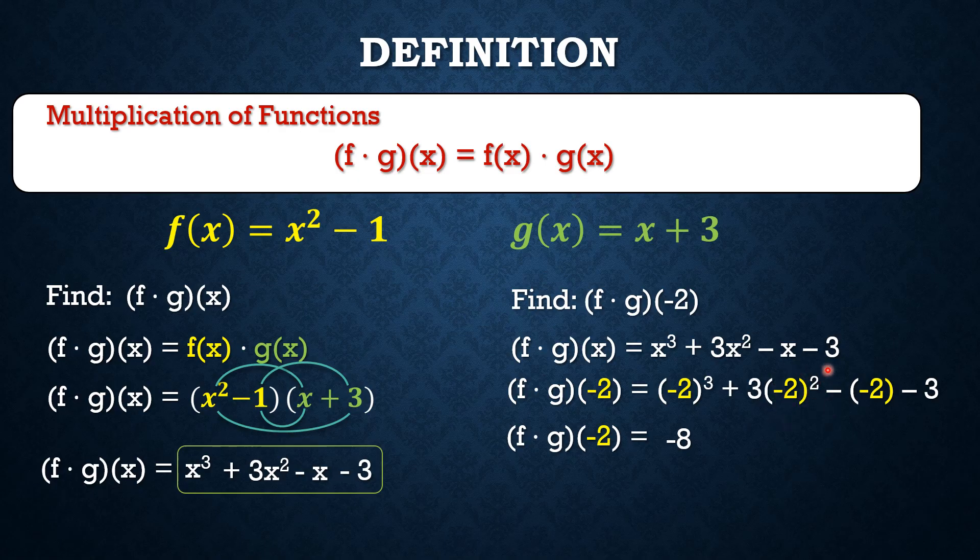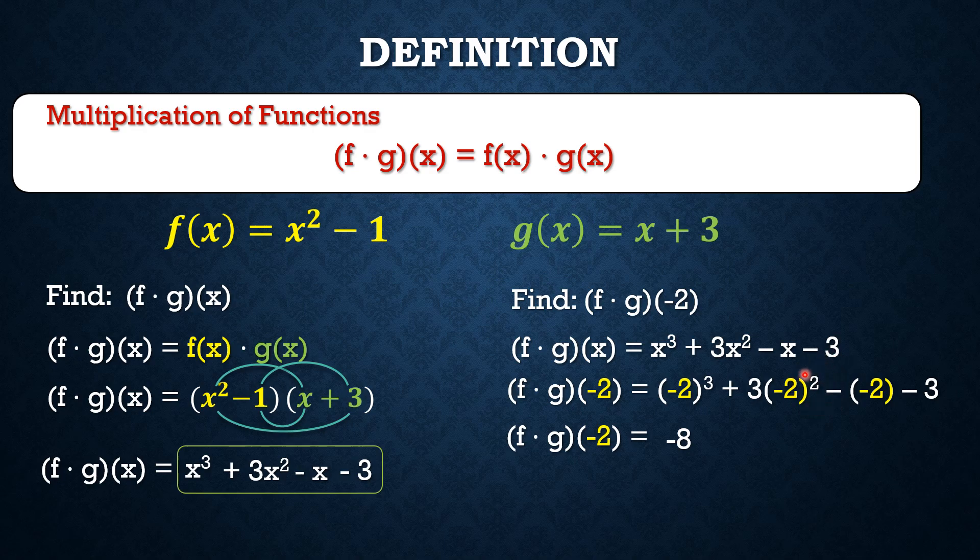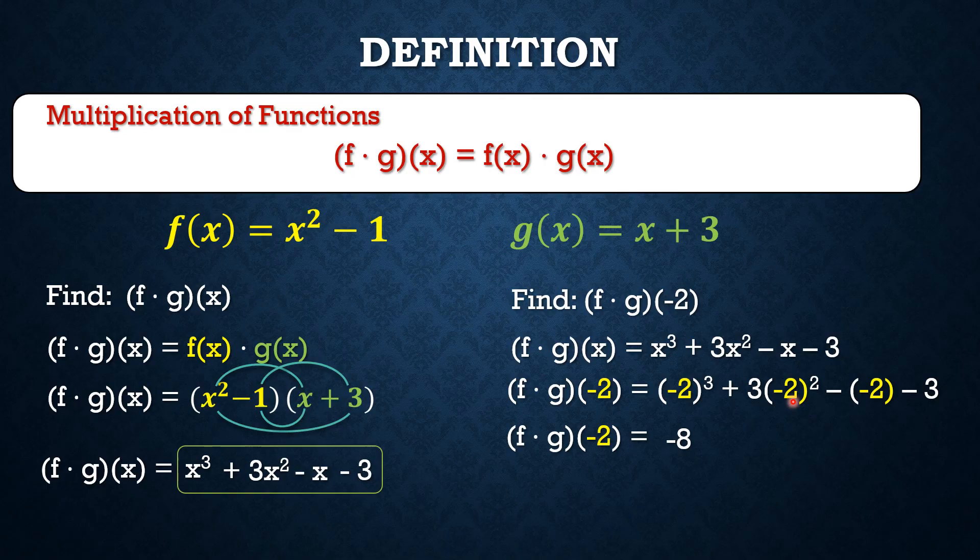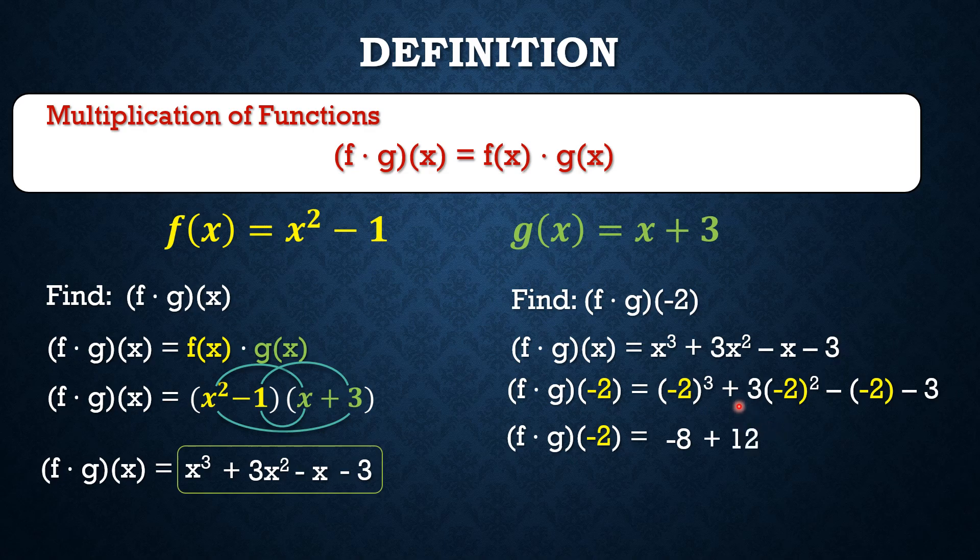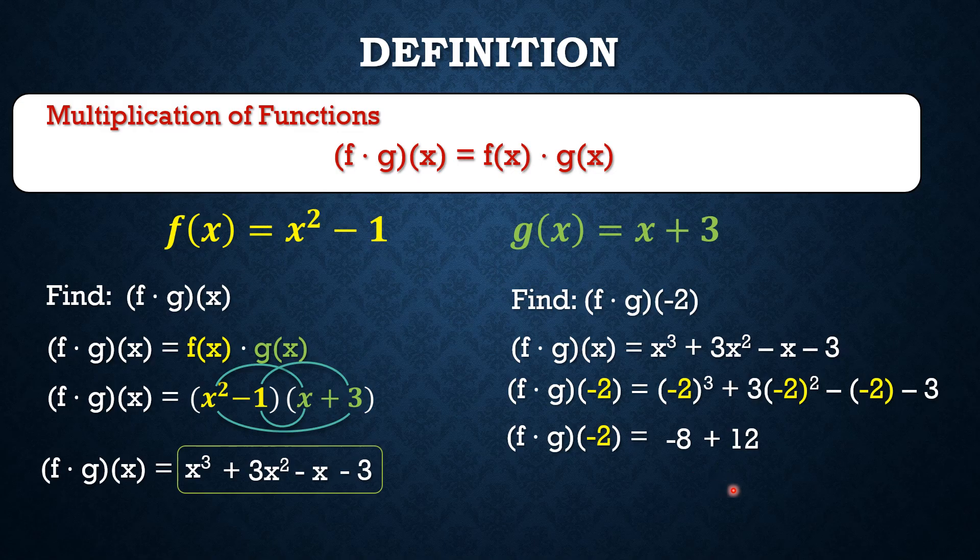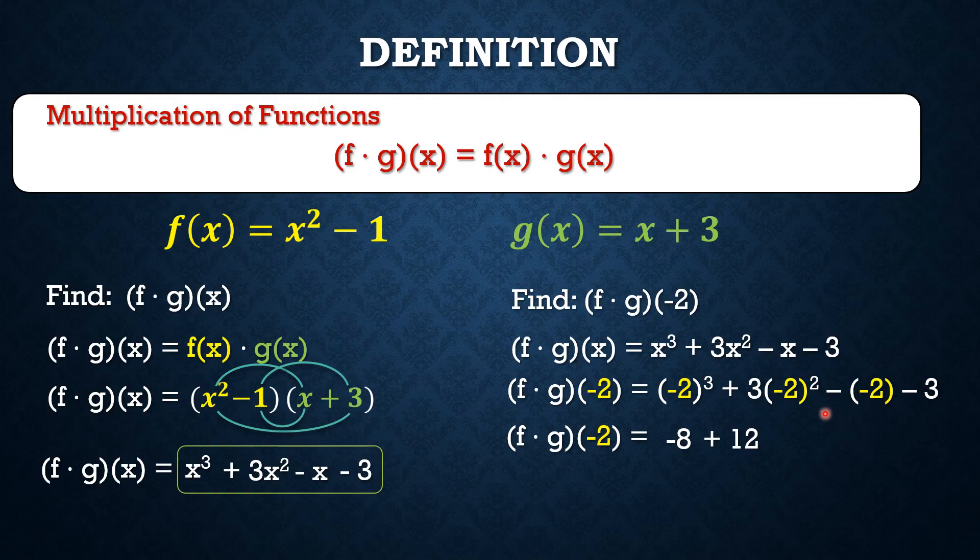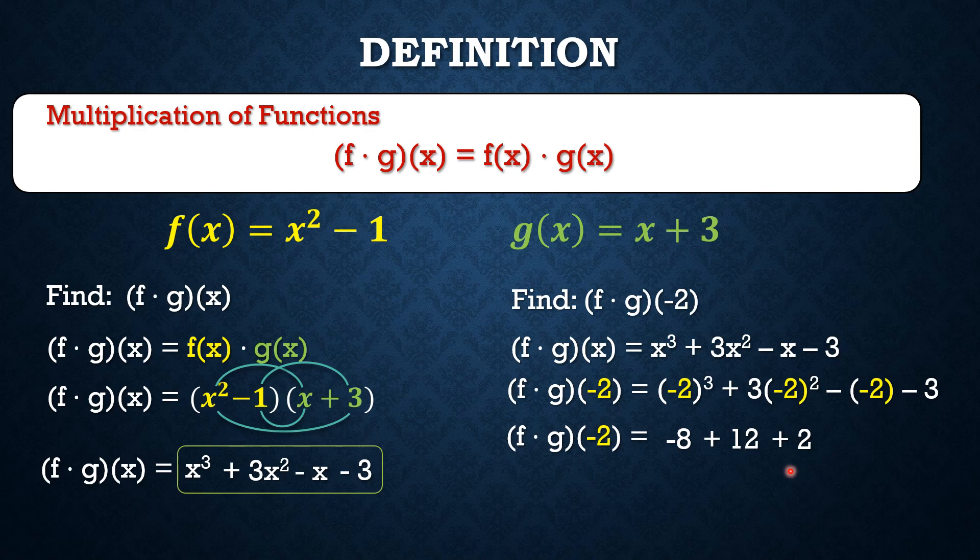3 times negative 2 squared. Now, in this case, let's do the exponent first. It means (-2)² and that gives us positive 4 because (-2) × (-2) is positive 4. Times 3 and that gives us positive 12. Next, we also have the minus of negative 2. Negative of negative 2 and that gives us positive 2.